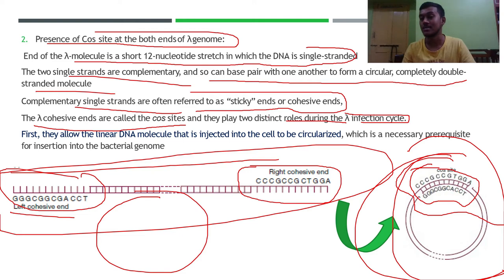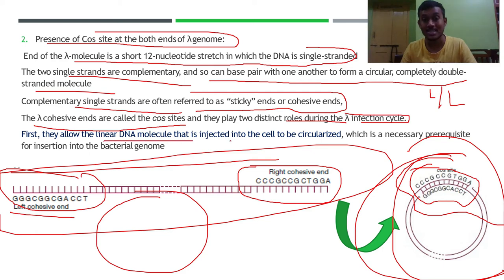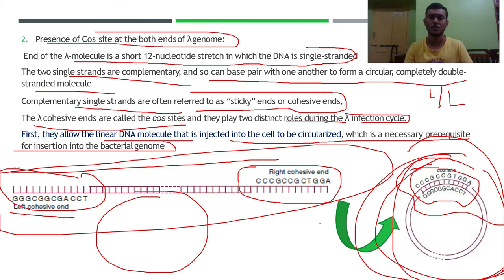The cos sites play a distinct role during the lambda infection cycle. First, they allow the linear DNA molecule that is injected into the cell to be circularized, which is a necessary prerequisite for insertion into the bacterial genome and for the processes that follow.